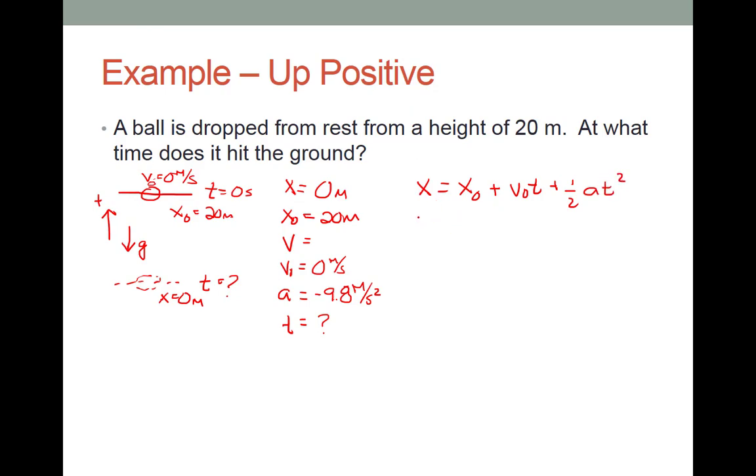x equals x-naught plus v-naught t plus one-half at squared. And now I'm going to plug numbers in. So I can do that by just looking at my grocery list. I see the position is zero. The initial position is 20. The initial velocity is zero. And then plus one-half. My acceleration is negative 9.8 meters per second squared t squared. And even though it looked scary, I realize this isn't that bad because of that v-naught equaling zero. It got rid of the t term. It makes it much easier.